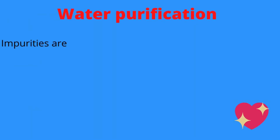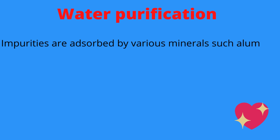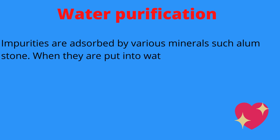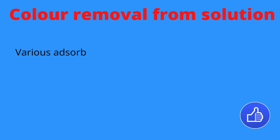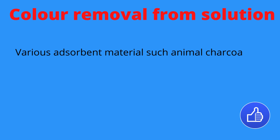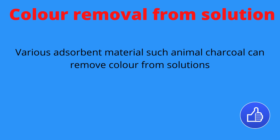Then, water purification. Impurities are adsorbed by various minerals such as alum stone. When they are put into water, they adsorb impurities and make the water clean. Then, color removal from solution. Various adsorbent materials such as animal charcoal can remove color from solutions.